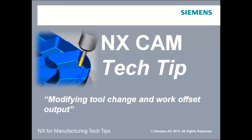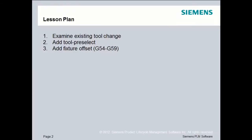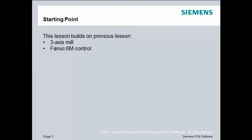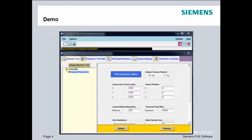Hi, I'm Jim Wright. In Post Builder Lesson 4, we'll explore tool changes and work offsets. Our lesson plan will examine an existing tool change, then modify that tool change by adding a tool pre-select, and finally add fixture offset capability to our post processor. This lesson builds on the previous post we've already created — a three axis mill for a Fanuc 6M control. Let's get started.